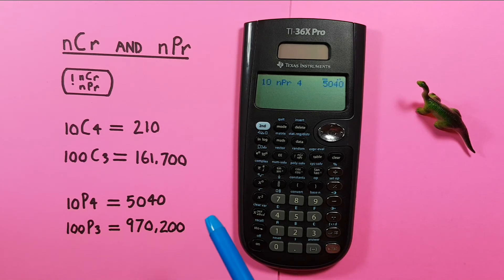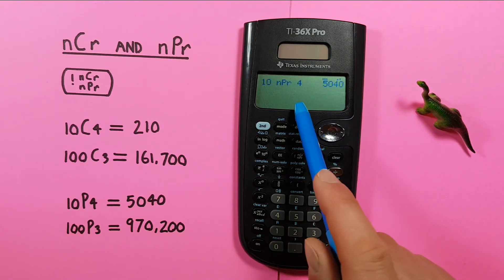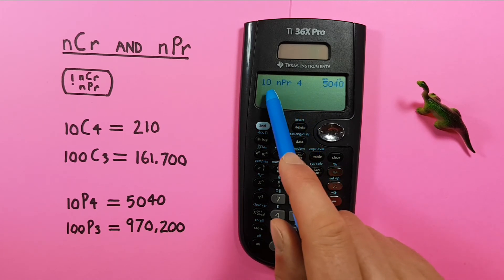And we see there are 5,040 possible permutations when choosing 4 from a set of 10.